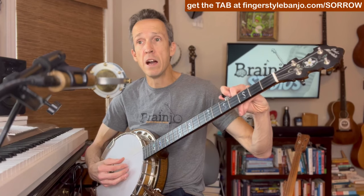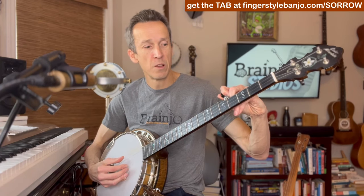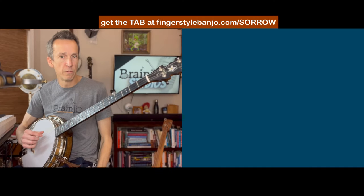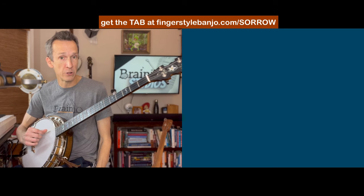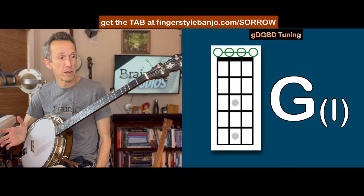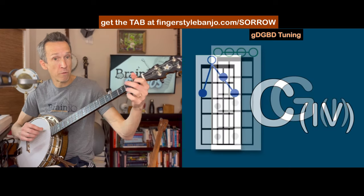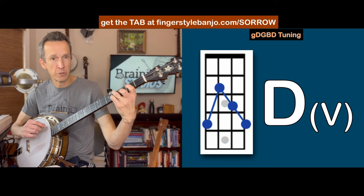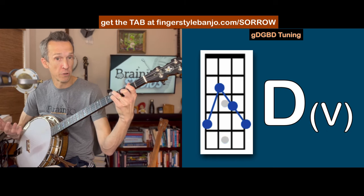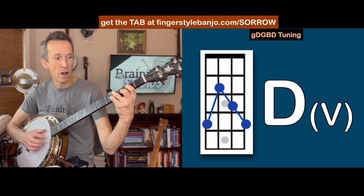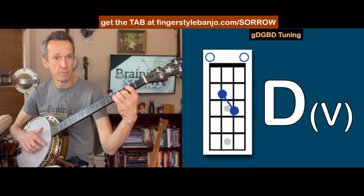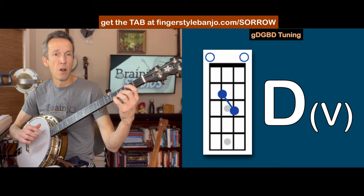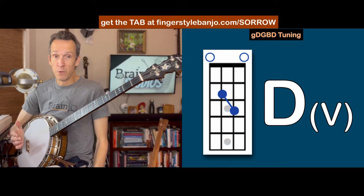For this song we need three chords — our one, four, and five chord — which in this key are G major, C major, and D major. G major we can just use our open strings. C major is our four chord. And then D major — this is our fully fingered version, which is our five chord. Or the partial D. Super simple chord progression.